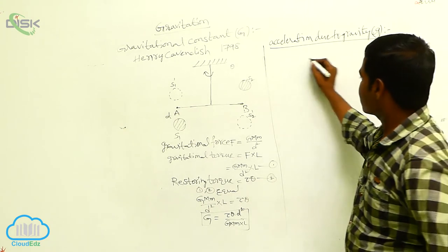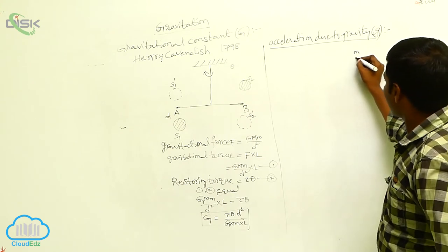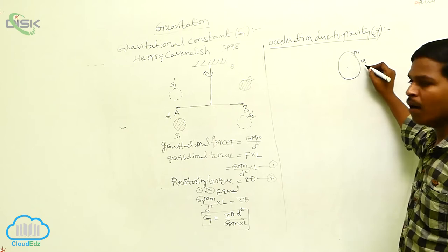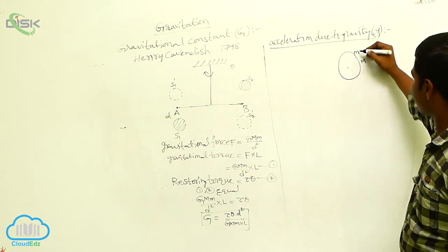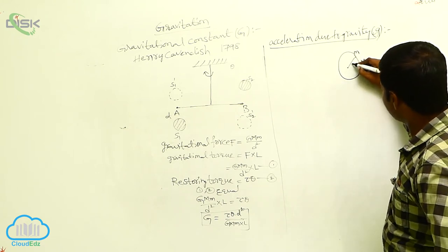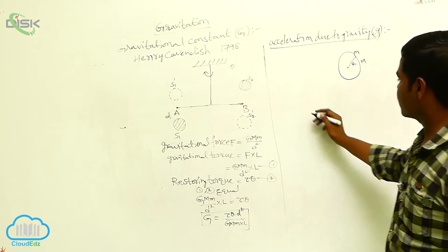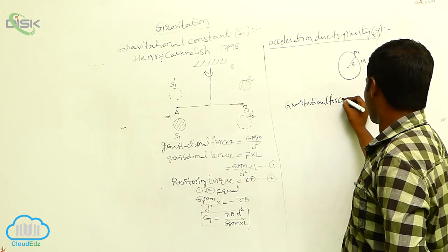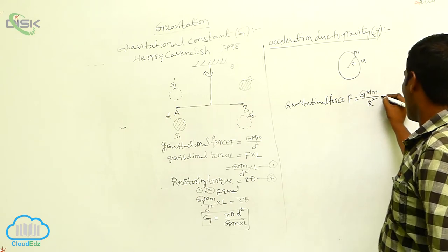Consider a small mass m of an object on the surface of a planet with capital mass M. Here capital M is the mass of the planet, and we are considering a small mass m of an object on its surface. The distance between these two masses is capital R. Then the gravitational force acting between these two masses — gravitational force F is equal to G times capital M times small m divided by R squared.